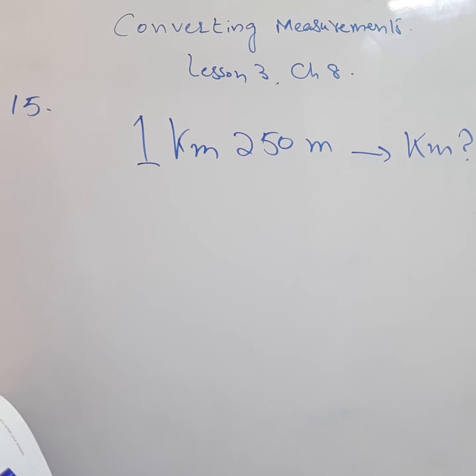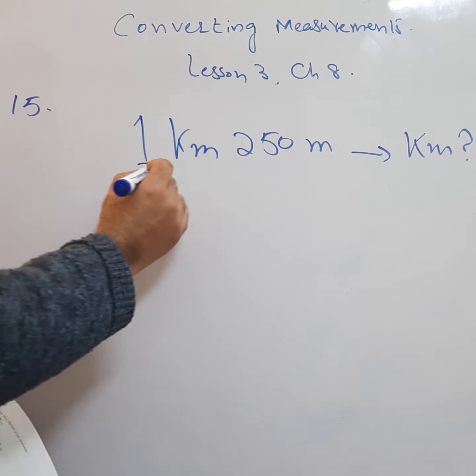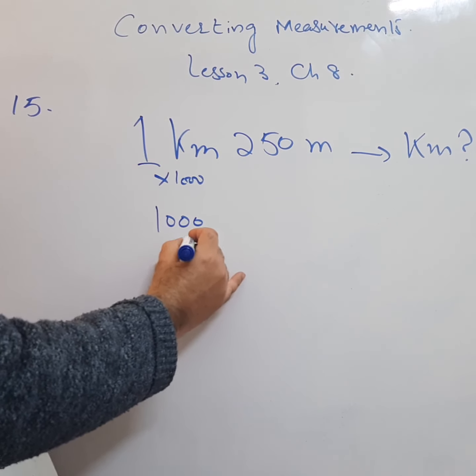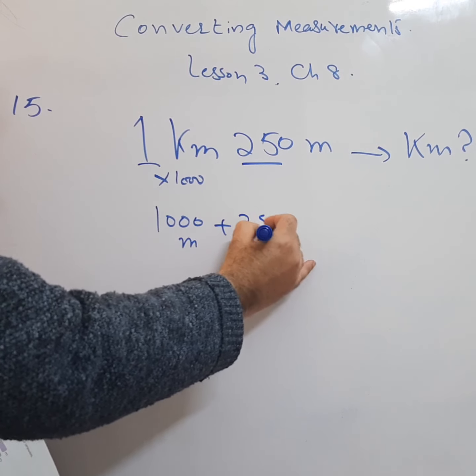First step is, we will convert this whole thing to meters. Then, we will divide that by 1000 and we will get the answer. So, just multiply this portion by 1000 and you get 1000 meters, and plus this 250 is also in meters.